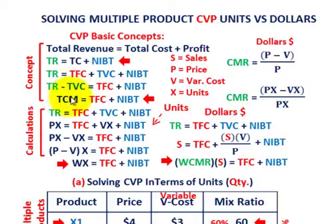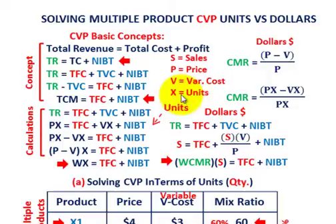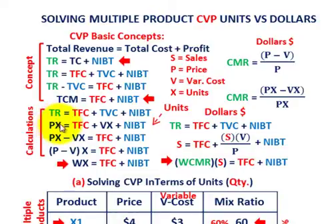Looking at it in terms of units, where S is sales, P is unit price, V is unit variable cost, and X is the number of units: our total revenues are some unit price times some quantity we'd be solving for. That equals our total fixed cost plus the variable cost per unit times some quantity X, plus some net income before taxes.